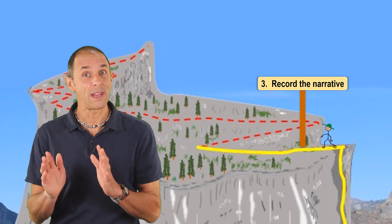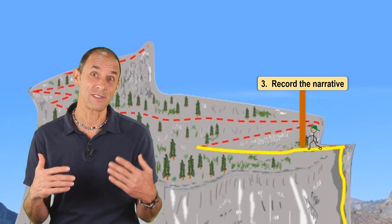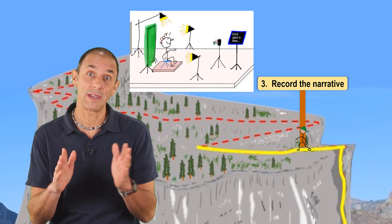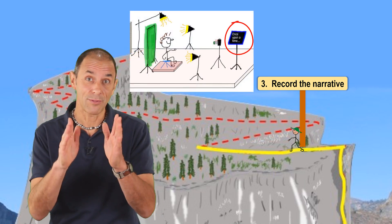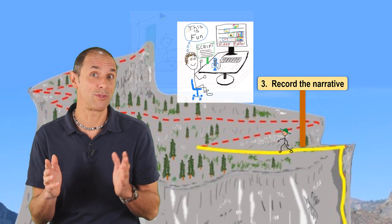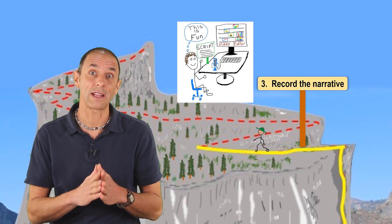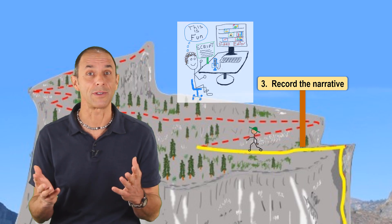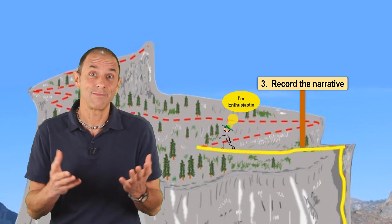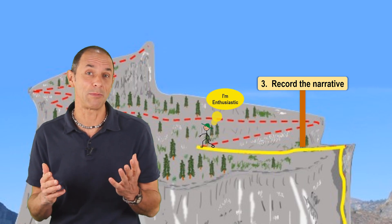Step three involves recording the narrative. For a video like this where I'm on screen in front of the camera, I sit in front of the camera and read my narrative from a teleprompter. For a simpler video where I'm just doing a voiceover and not on screen, I just read that narrative directly into my computer. When I record it, I try to sound enthusiastic and pretend like I'm talking to one of my good friends or family members.